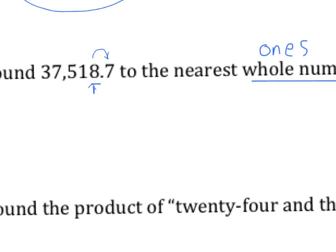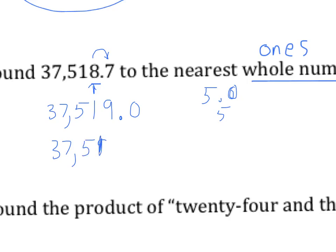We add one more, and then everything after becomes zero. So the 37 comma — five, one stays the same. The eight, we said it's got to grow — add one more — so we add one to the eight, which becomes a nine. Everything else becomes zero, so point zero. Do we need to show point zero? No. Just like if a number is five point zero, you don't have to write that. So our answer is just 37,519.